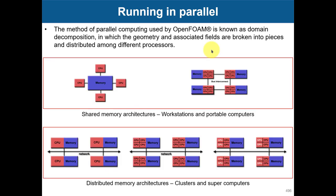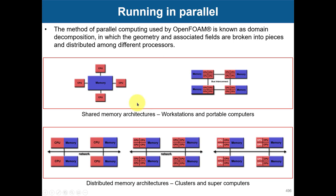There are different ways to run in parallel. You have shared memory architectures, like in your computers where you can have two sockets or one single computer with all of them accessing the memory. Or you can have distributed memory architecture — these are clusters and supercomputers. You put many of these configurations connected through a high-speed network. The network is what you pay for when running on supercomputers, because it's very efficient — that is the key difference. For OpenFOAM, it doesn't matter what system you have; we run the same way, but ideally we want more cores available.